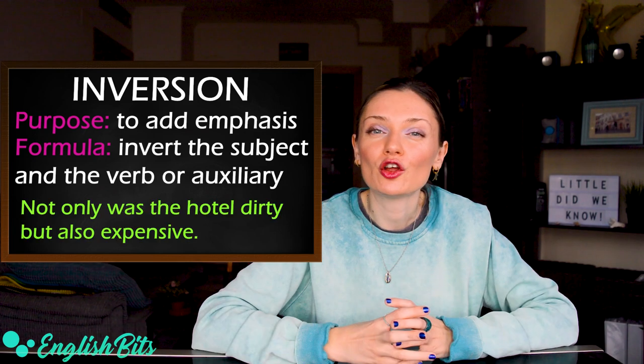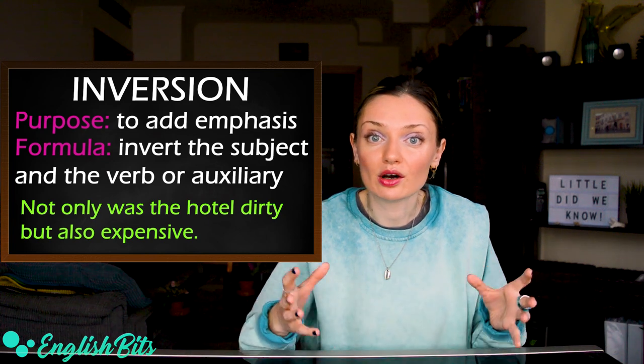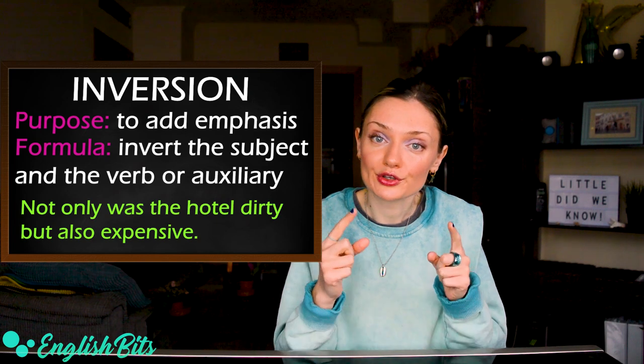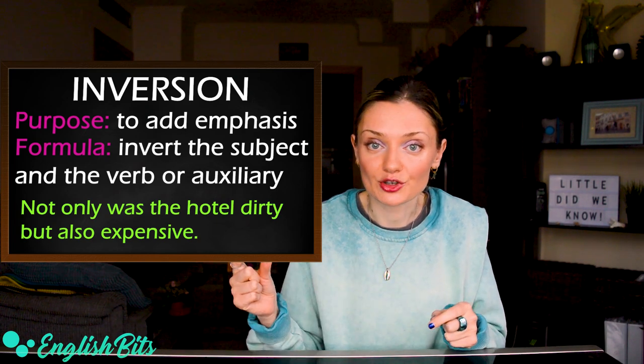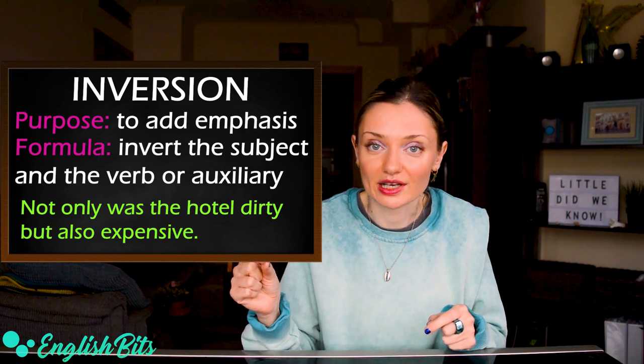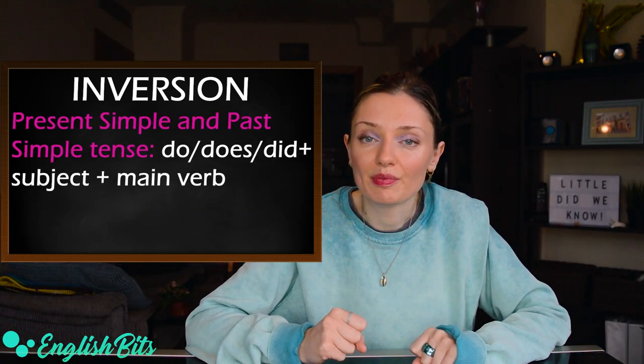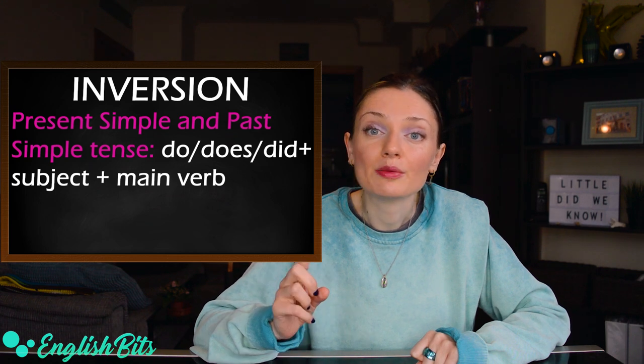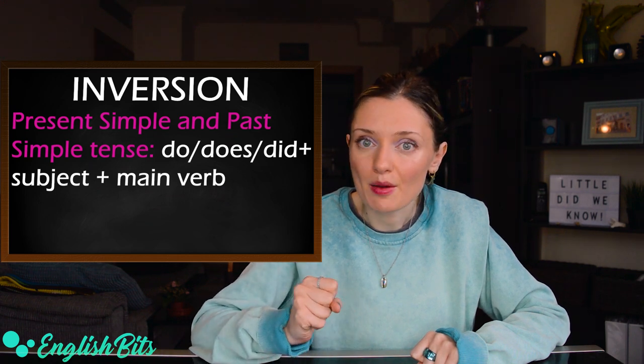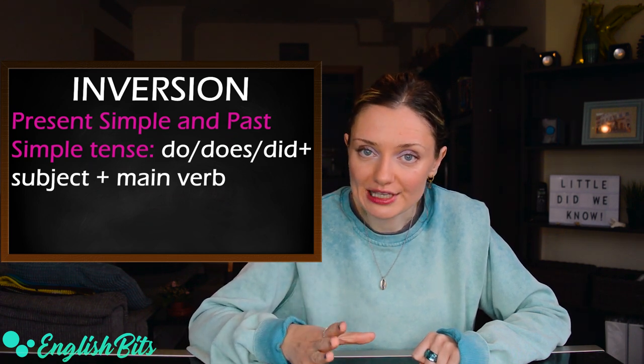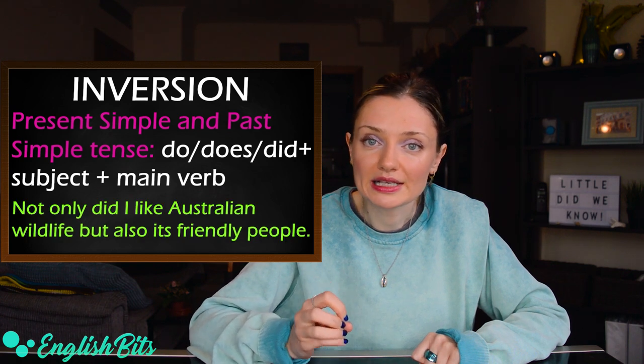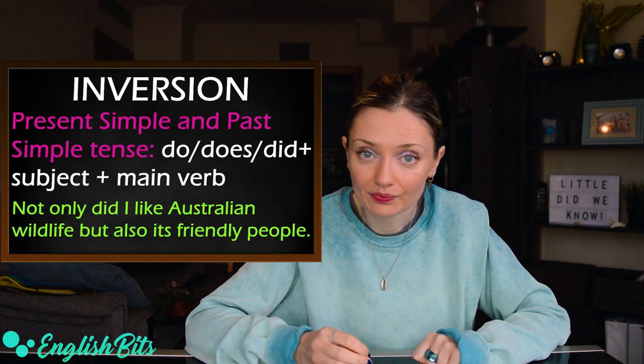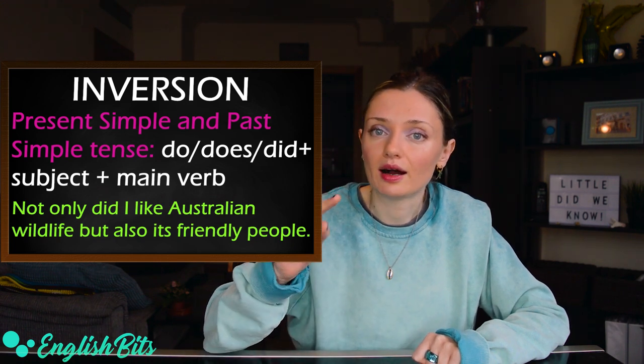For example, not only was the hotel dirty but also expensive. First, the verb to be and then the subject. Was the hotel. In the present and past simple, we need to use do, does, did plus subject plus main verb. For example, not only did I like Australian wildlife but also its friendly people. Not only did I like.